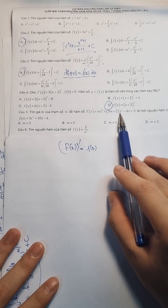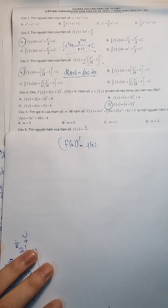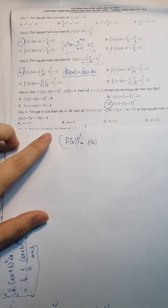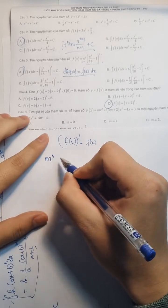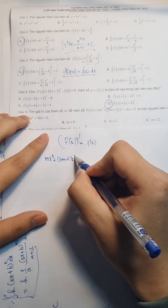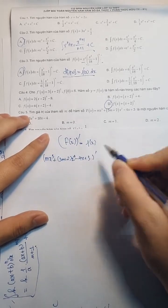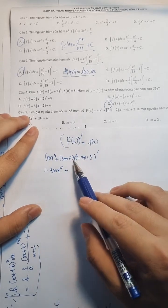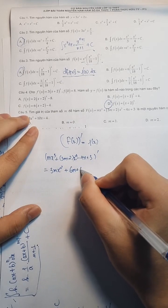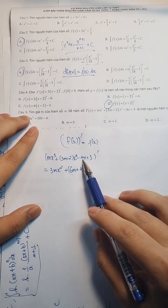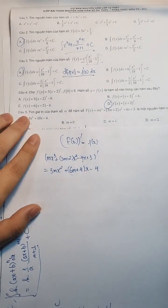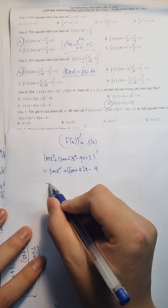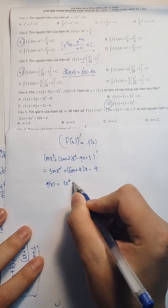Thì bây giờ các bạn chỉ việc đi đạo hàm thằng này xong nhé. Ta có m(x³) + 3m(x²) + (2x)² - 4x + 3. Ta lấy đạo hàm. x³ lấy đạo hàm thì bằng 3mx². x² lấy đạo hàm thì bằng 6m+4 nhân với x đúng không? Trừ 4x lấy đạo hàm thì là trừ 4. 3 lấy đạo hàm thì bằng 0.